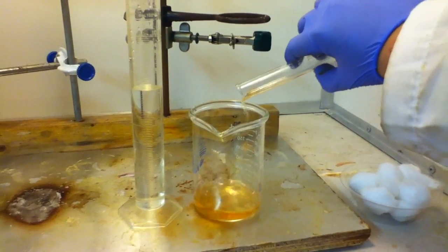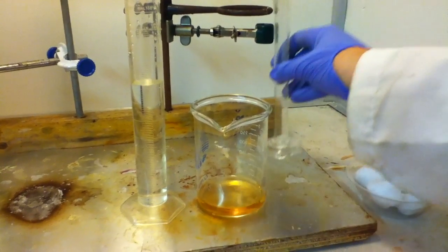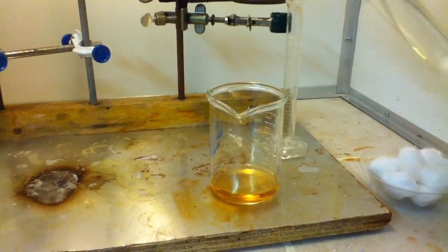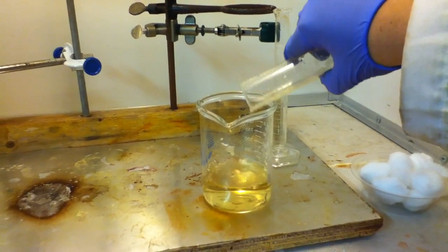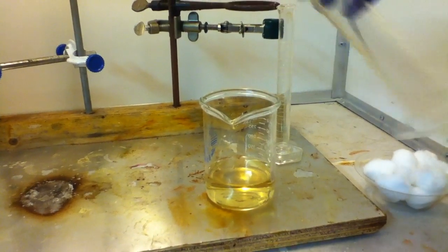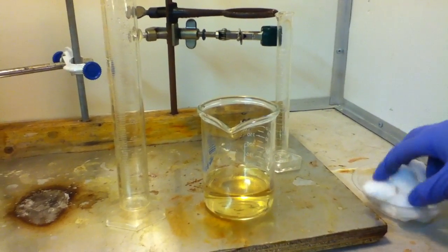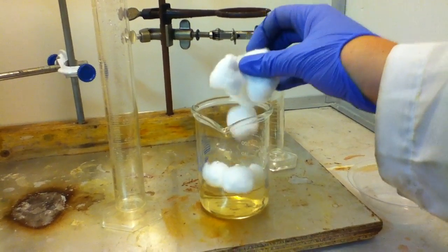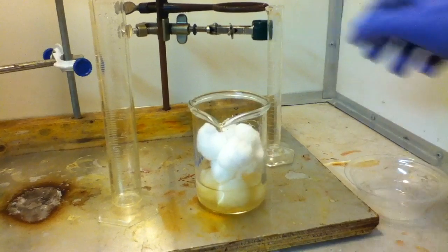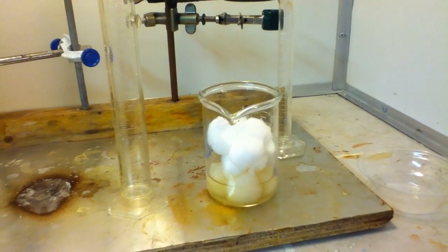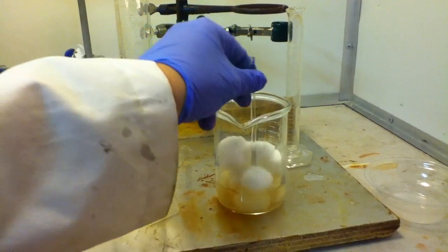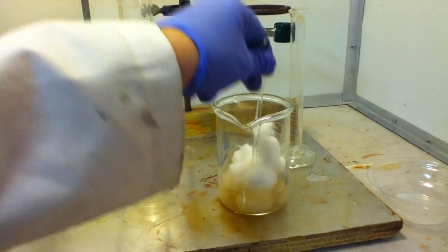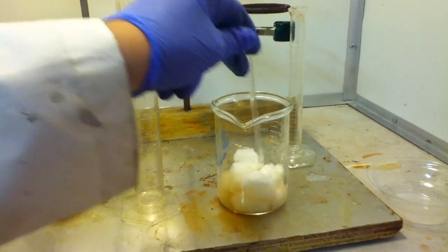Mix the two acids, remembering to add the sulfuric acid to the nitric acid. The solution will heat up considerably. Then, add your cotton to the nitrating mixture. The mixture of acids is volatile and fuming, so don't breathe the fumes. Make sure the cotton is entirely soaked.